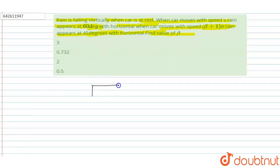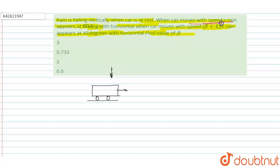Let us consider this is a car moving in a direction, and rain is falling in this direction. In the first case, when the car moves with speed V, rain appears at 60 degrees with the horizontal. The direction of rain is in this direction, and the resultant is in this direction — 60 degrees with the horizontal.